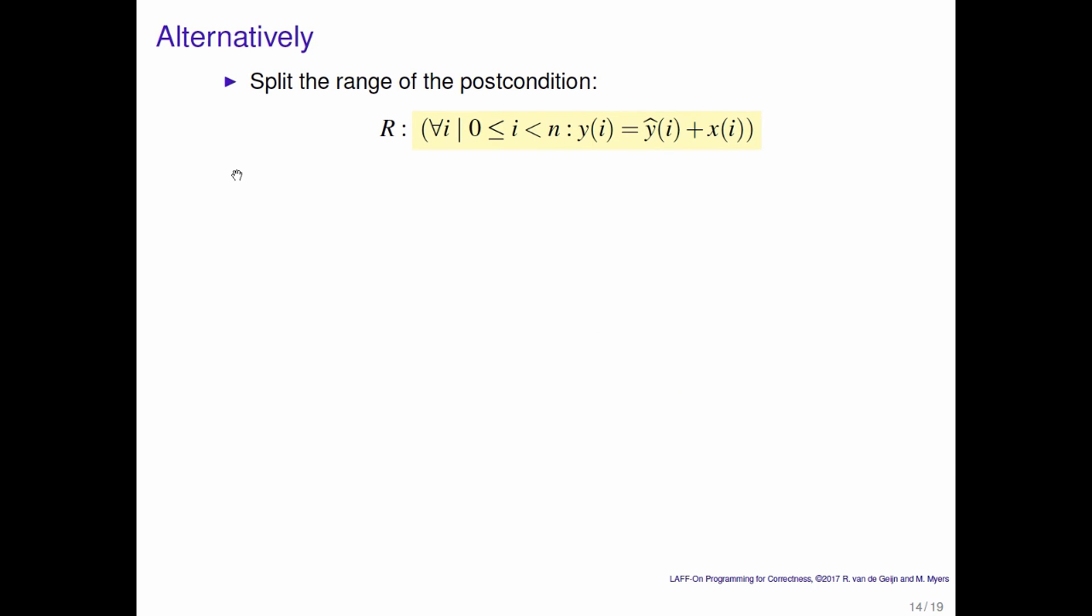There's another way of looking at this. Look at the postcondition R. This is what you want to compute. Split the postcondition into a part that says something about the first K elements of array Y, and then the remainder. And again, the green box there has to be introduced to make sure that in the quantifiers you don't address entries in arrays of X and Y that don't exist, that are not between 0 and N-1 inclusive.